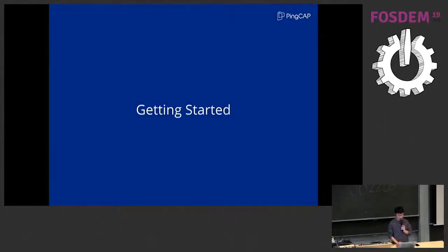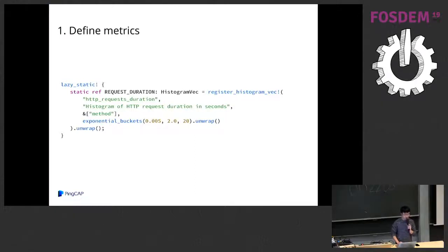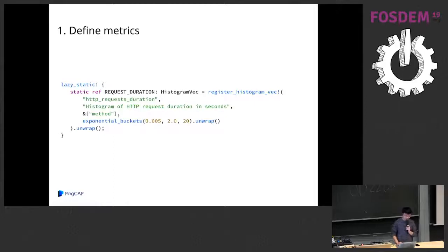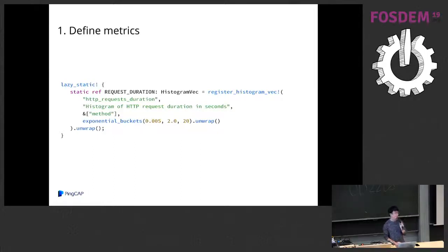Let's get started and look at a small example of how to use this library. First, you need to define your metrics. There are many kinds of metrics like counter, histogram, gauge, and so on. As the code demonstrates, we create a histogram metric named HTTP request duration using the macro called register_histogram_vec. The histogram has one label called 'method'. This is actually a histogram vector because for each value of the label, it will be a different metric counted independently.